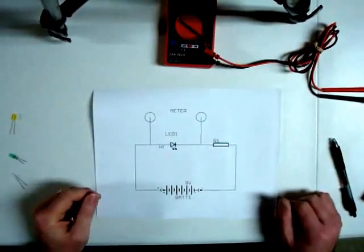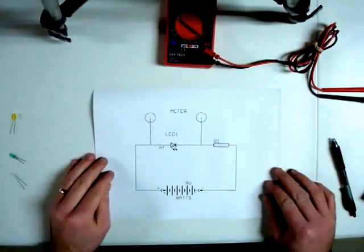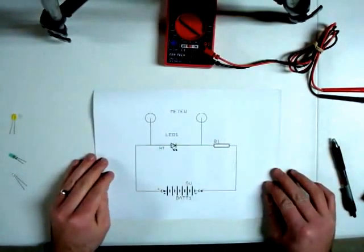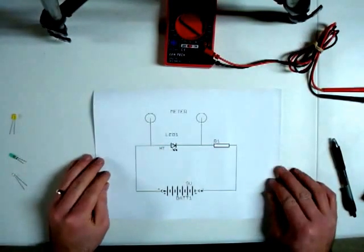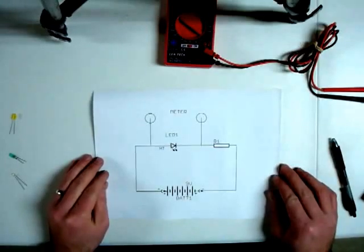In this video I just want to demonstrate how you can measure the forward voltage drop of an LED using a simple multimeter, just very few components.